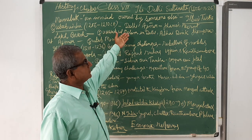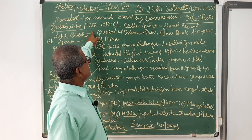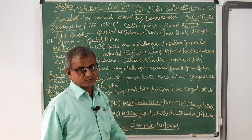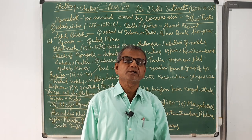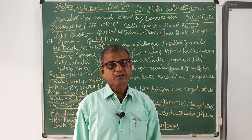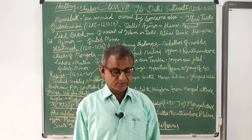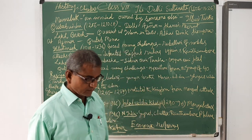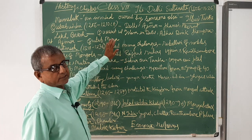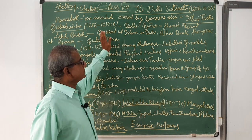Almost all the rulers of the Delhi Sultanate called themselves Sultan. During the Sultanate period, five dynasties ruled in India: the Slave dynasty, the Khalji dynasty, the Tughlaq dynasty, the Sayyid dynasty, and the Lodi dynasty.